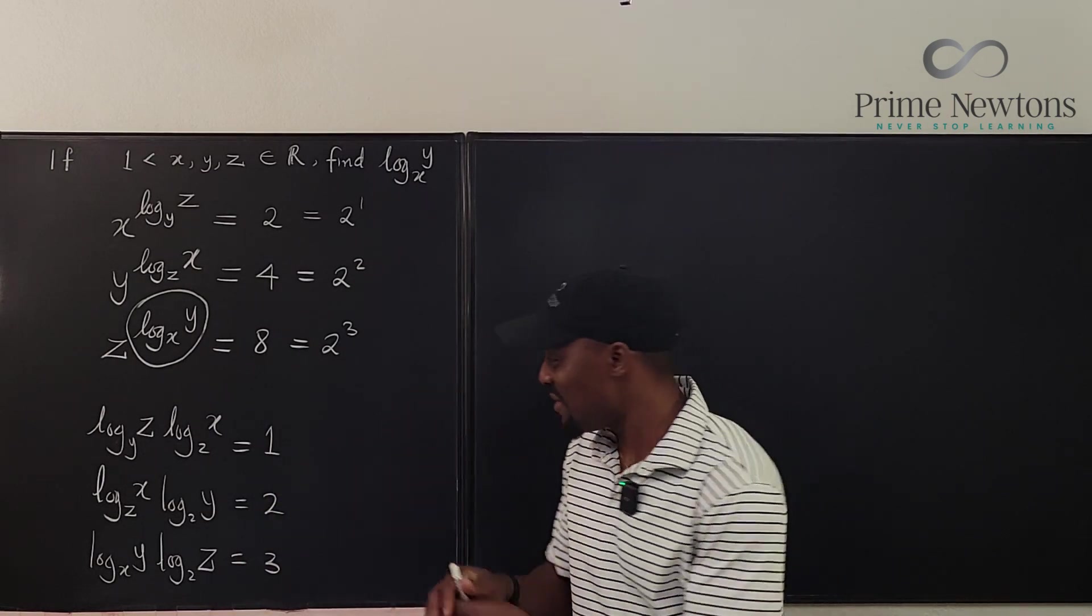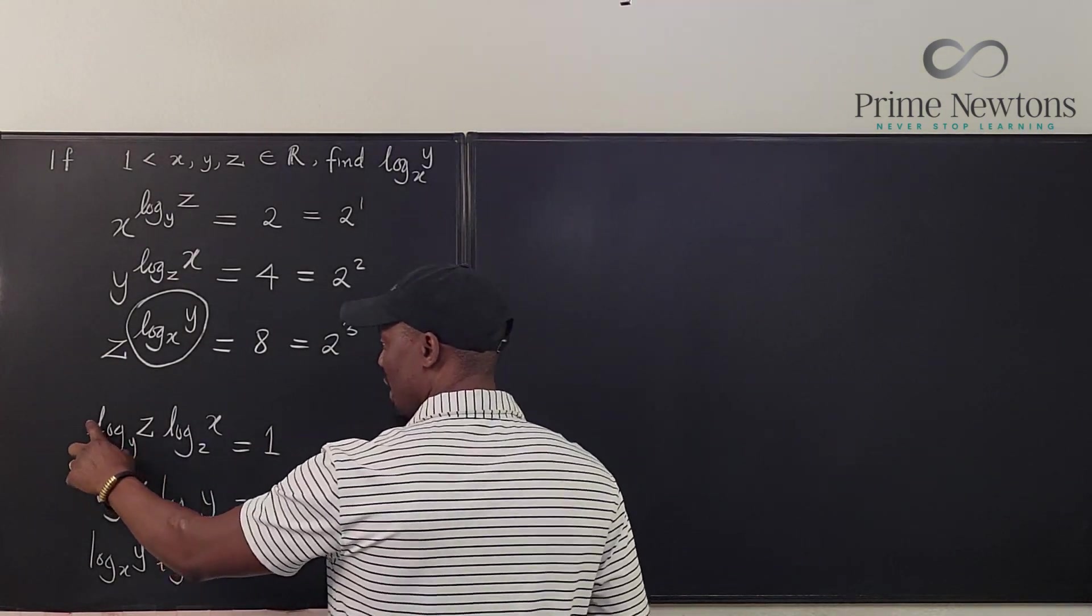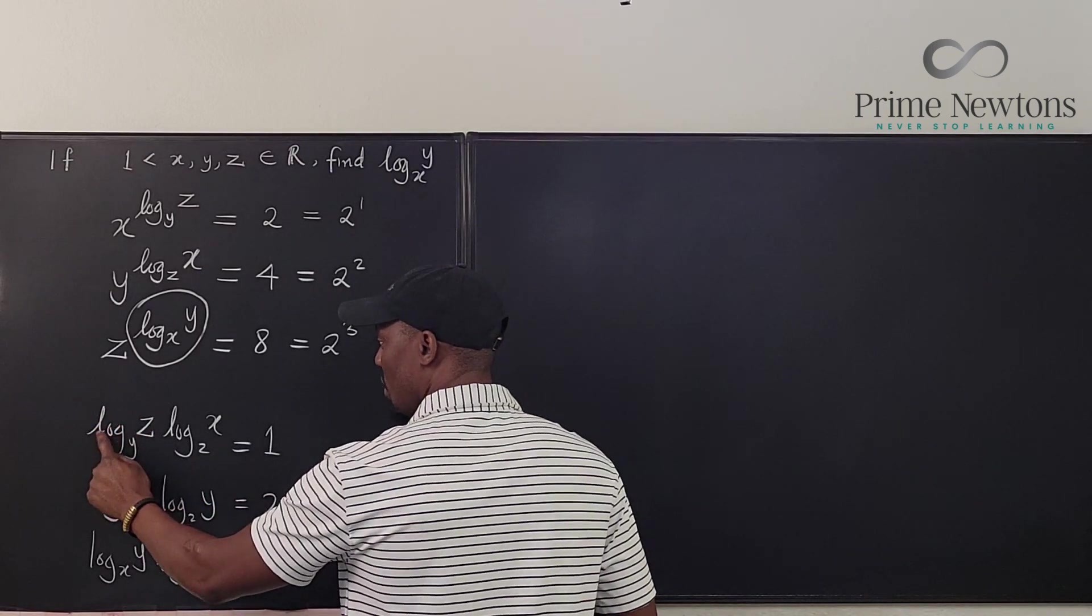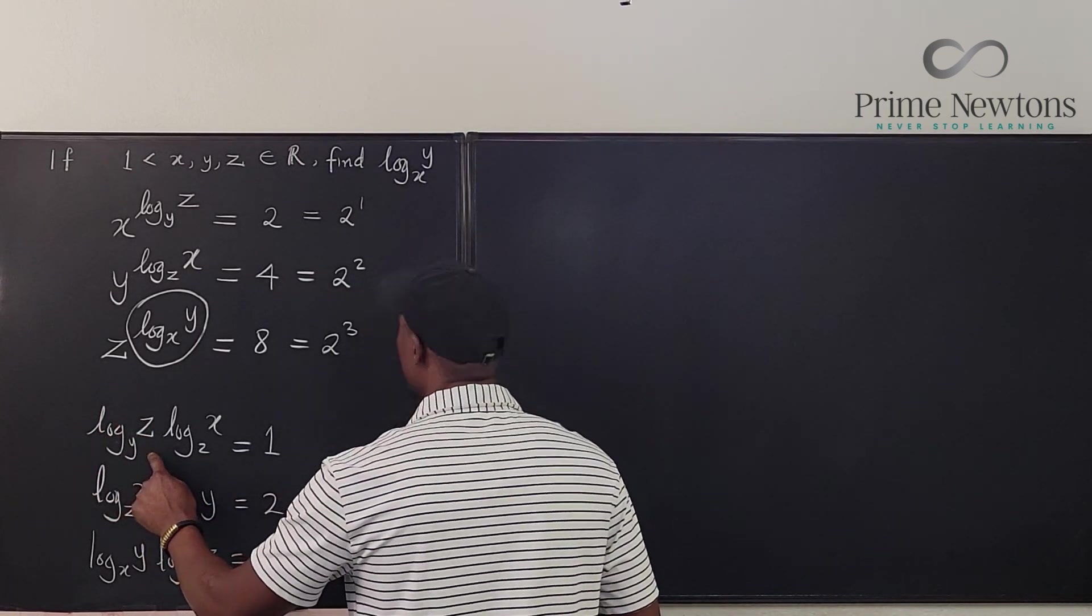And that makes life very easy because we're going to go here and say that we can do change of base. So this becomes log z in base 2 over log y in base 2.